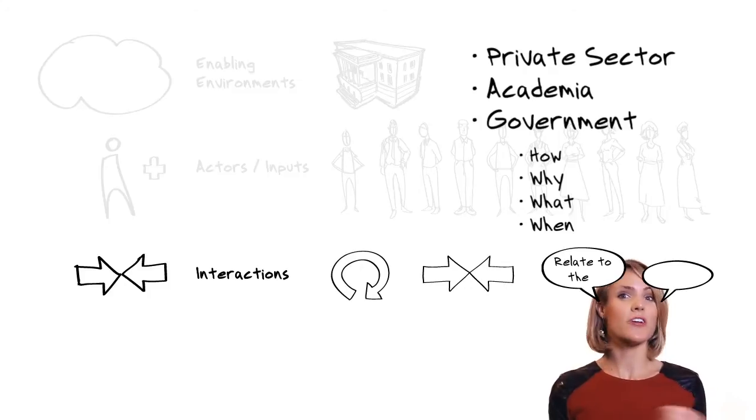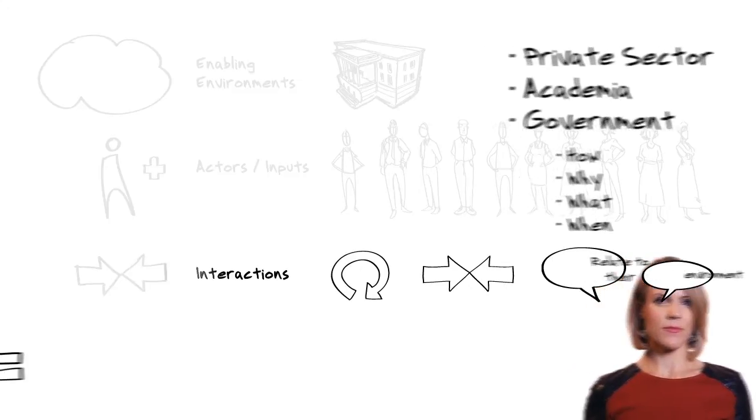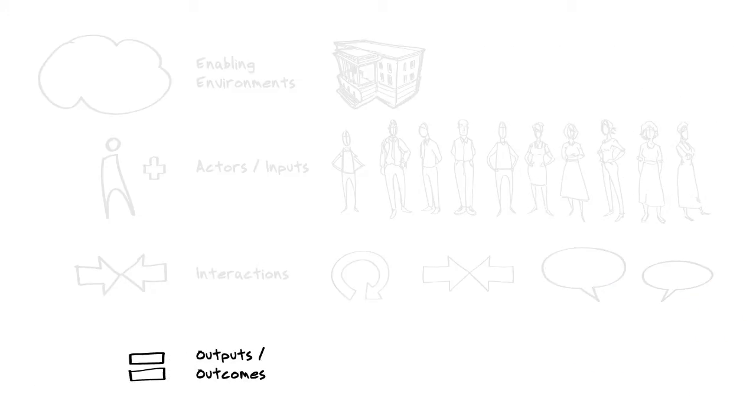And then how do those actors relate to their enabling environment? Outputs and outcomes constitutes the fourth dimension. So the outputs and outcomes of a given context can include not just the products, but novel processes that innovators bring to bear, as well as such social outcomes as wealth, health, or well-being.